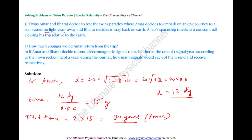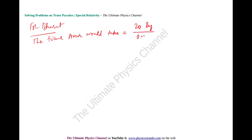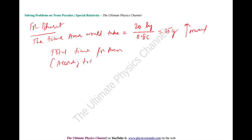For Bharat on earth, the distance is 20 light years at 0.8c, giving 25 years one way. Total time according to Bharat is 2 × 25 = 50 years. So the two twins do not agree on the same duration: Amar ages 30 years while Bharat counts 50 years.